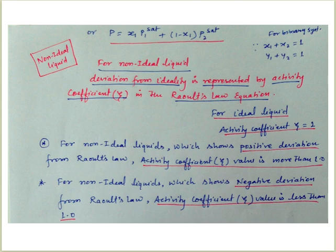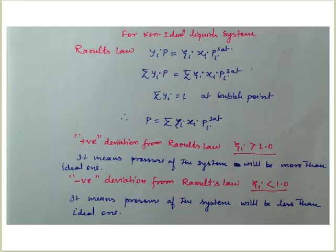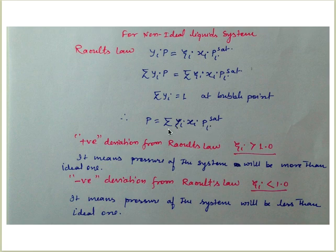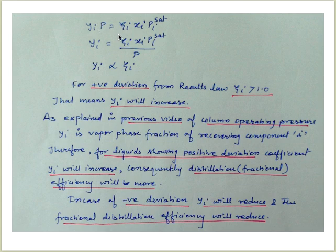For non-ideal liquids, we use the modified Raoult's Law: y_i * P = gamma_i * x_i * P_i_sat. Applying summation to both sides, and setting sigma y_i equal to 1 at bubble point, we get P equal to sigma(gamma_i * x_i * P_i_sat). For positive deviation, gamma greater than 1 means system pressure is higher than ideal; for negative deviation, gamma less than 1 means pressure is lower.